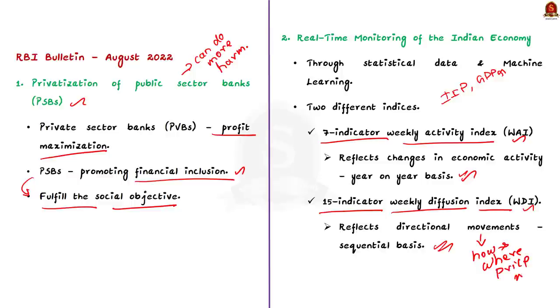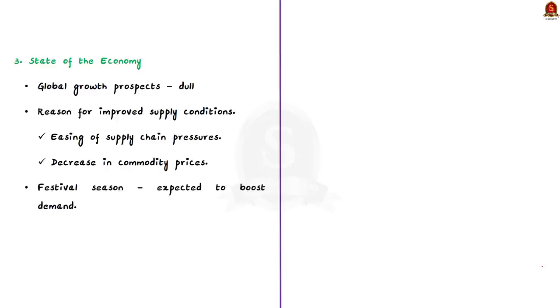Thirdly, the bulletin highlights that global growth prospects was dull over the month, which is August month. It also says that easing of supply chain pressures and the recent decrease in commodity prices are providing some breather from record high inflation. The bulletin says that the supply conditions are improving in India also and there is hope that the onset of festival season will boost the consumer demand.